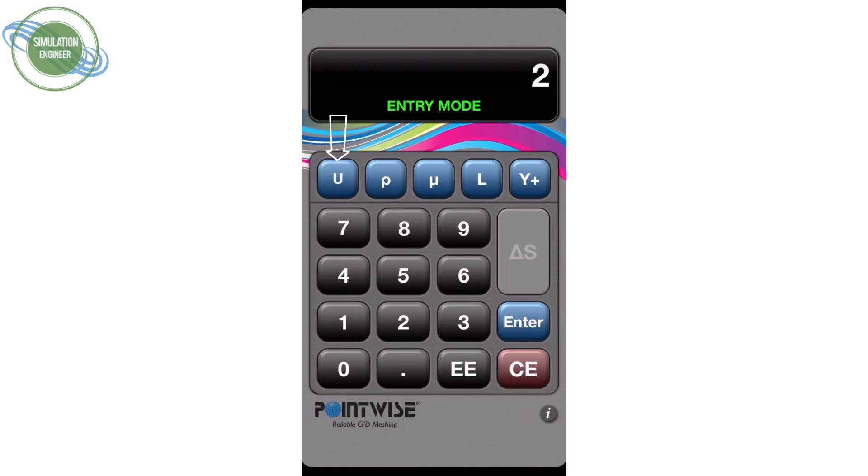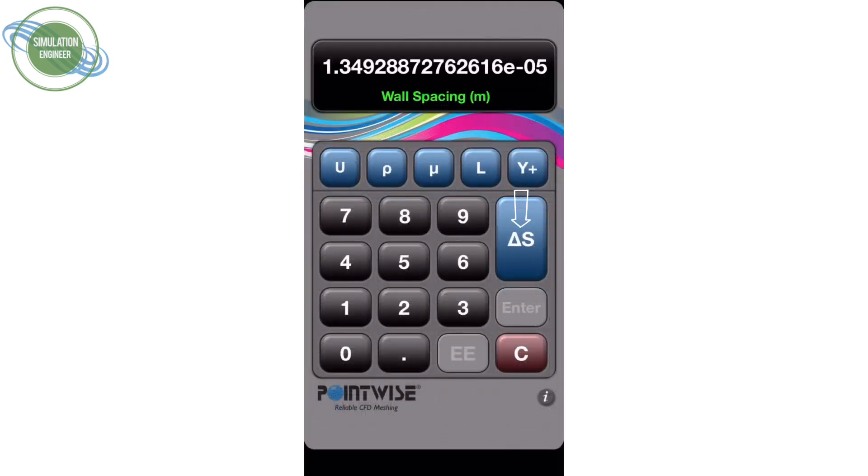Just start the y plus calculator. Starting from top left to right, we first start with velocity, assign the desired velocity, then continue to the density parameter. If we're happy with it, we move on to dynamic viscosity, then to the reference length or chord length, which in this case is one. Once we enter the desired y plus value and press the delta s button, you will get the desired value.